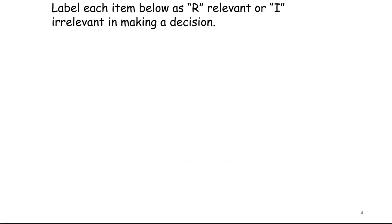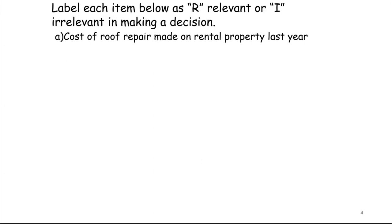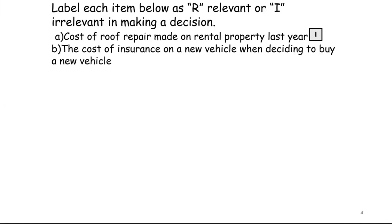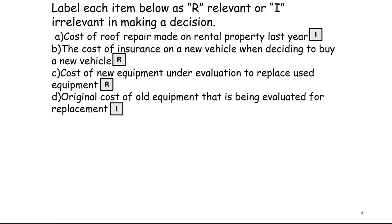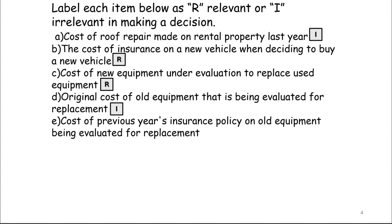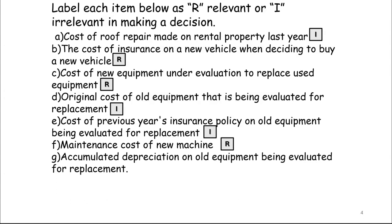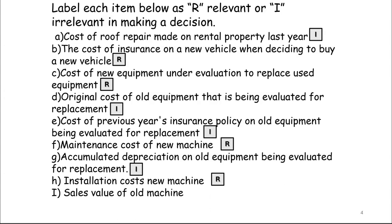Let's go through some examples. The cost of a roof repair made on a rental property last year — irrelevant, because the money's already gone. The cost of insurance on a new vehicle when deciding to buy — relevant, because that cost changes in the future. Cost of new equipment under evaluation to replace used equipment — relevant. Original cost of old equipment being evaluated — irrelevant. Cost of previous year's insurance policy on old equipment — irrelevant. Maintenance cost of new equipment — relevant, though only the difference matters if you're already paying maintenance. Accumulated depreciation on equipment being evaluated for replacement — irrelevant. Installation cost for the new machine — relevant, because that's a cost that would change. Sales value of the old machine — relevant.